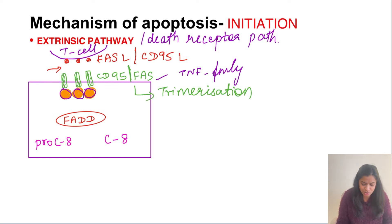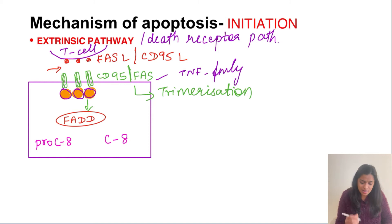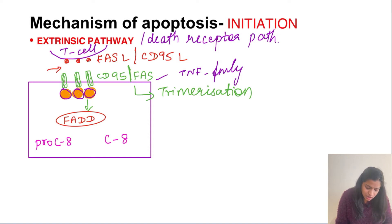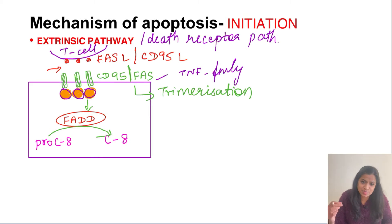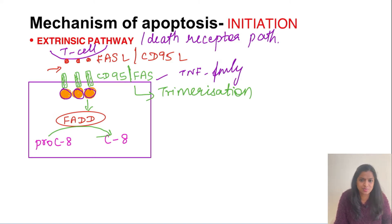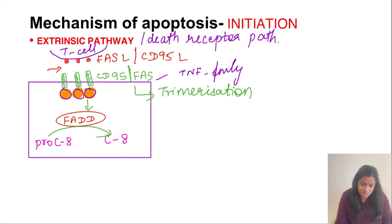When these receptors undergo trimerization, they activate a protein called FADD. FADD then activates the inactive pro-caspase enzyme into the active caspase — specifically caspase 8. The extrinsic pathway involves activation of caspase 8 and caspase 10, where caspase 10 is the one present in humans. So this finally results in the activation of caspase 8.